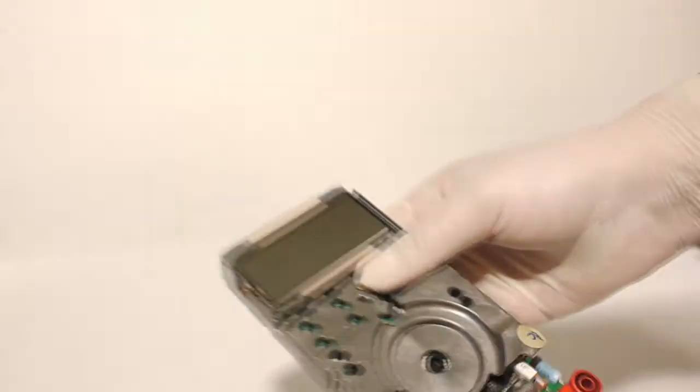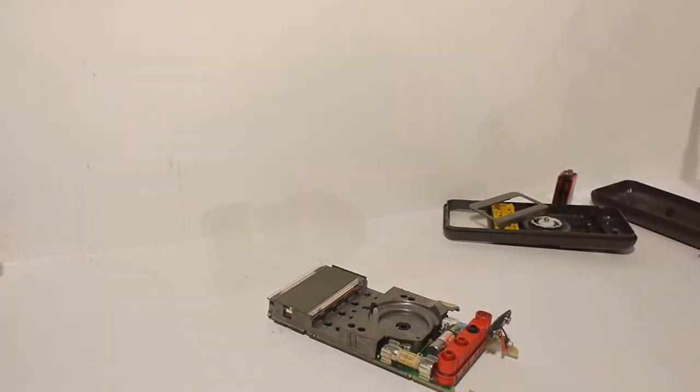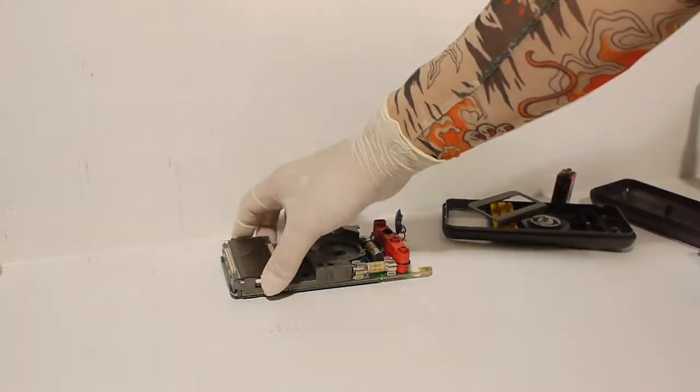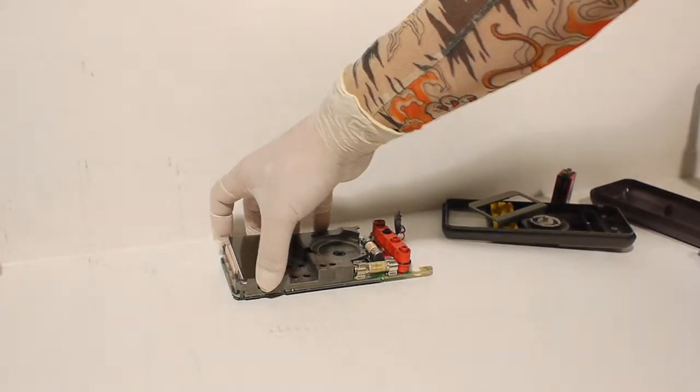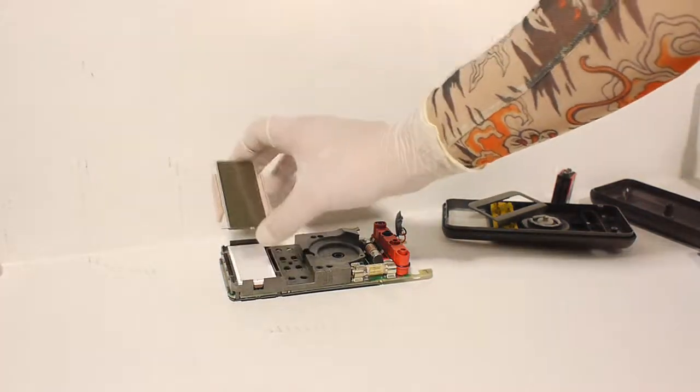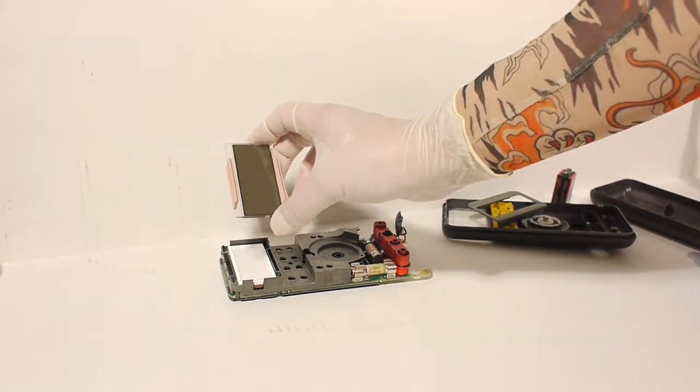Step seven. Remove the LCD from the main PCB. This may be accomplished by hand or if necessary, a small flathead screwdriver or similar tool. Simply pry along the sides gently.